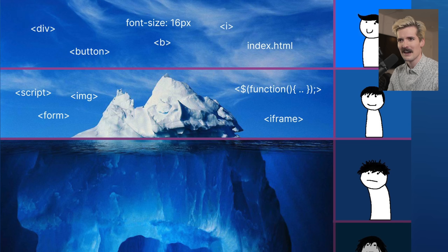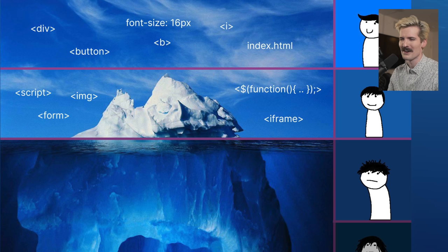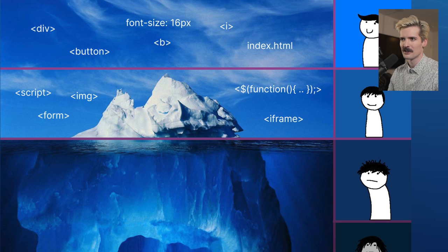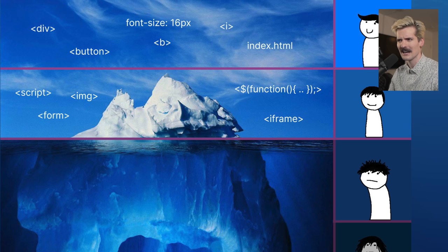We immediately have script tag, image tag, and form. All three of these have so many behaviors that you might not know about. Iframe is even worse — I would have put this a layer deeper personally. And there was an accidental bracket wrapping this function call here. This is supposed to be the equivalent of document.ready inside of jQuery — the syntax for having a jQuery function run as soon as the document is done loading.